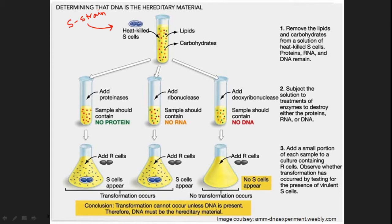After preparing the extract, lipids and carbohydrates were first removed using several enzymes. After removing the lipids and carbohydrates, the extract now contained only proteins, RNA, and DNA. After preparing this extract with only protein, RNA, and DNA, it was then divided into three different parts.